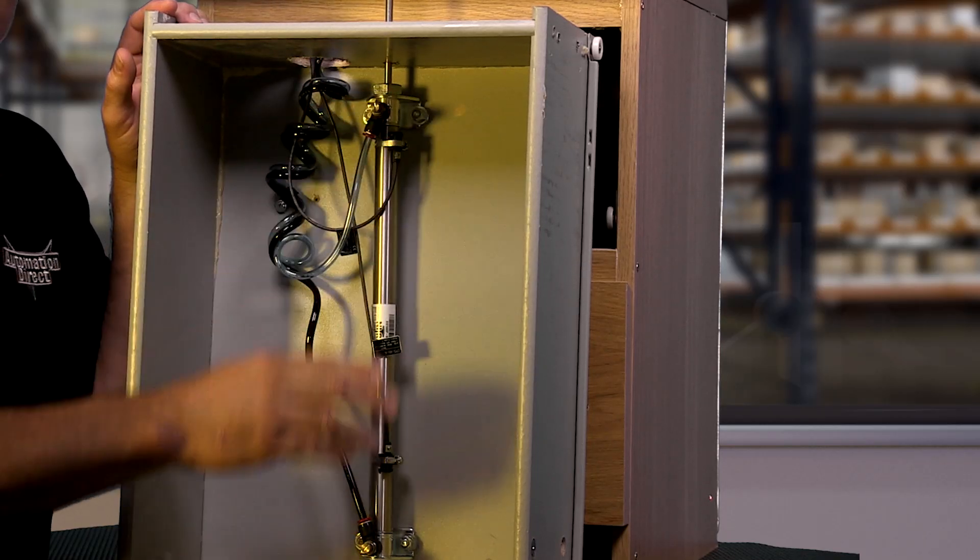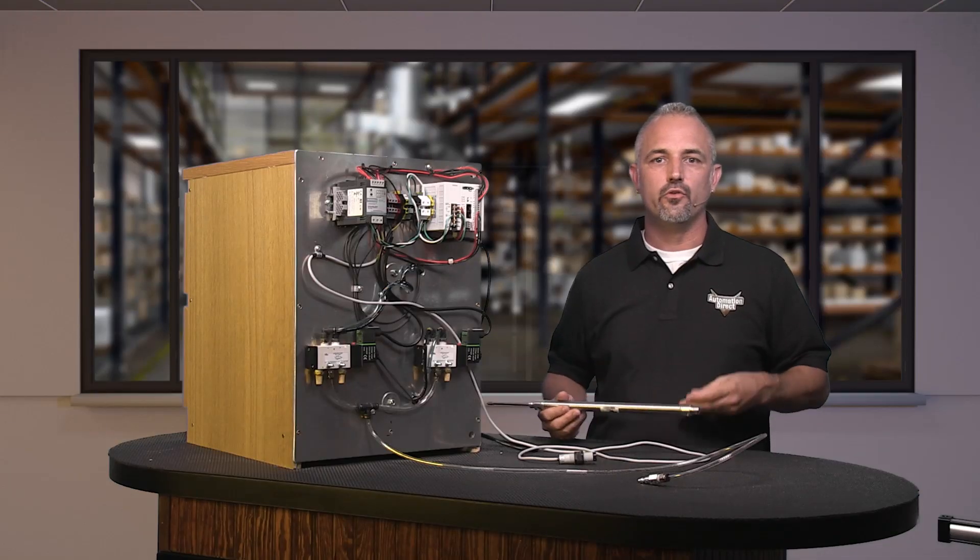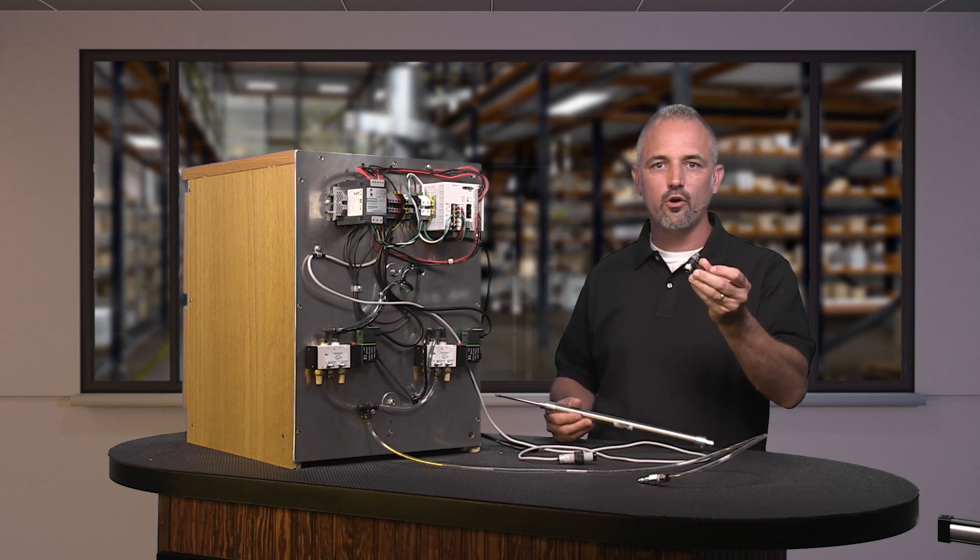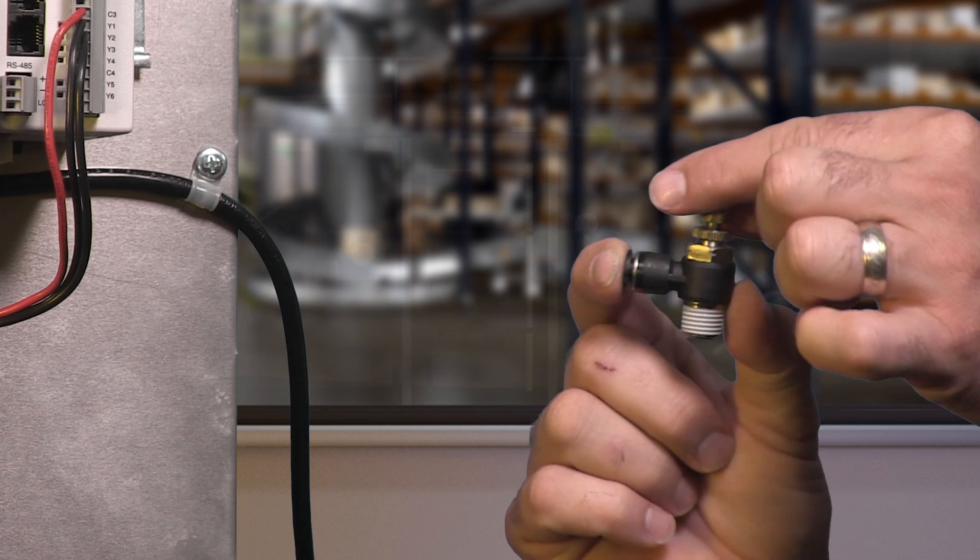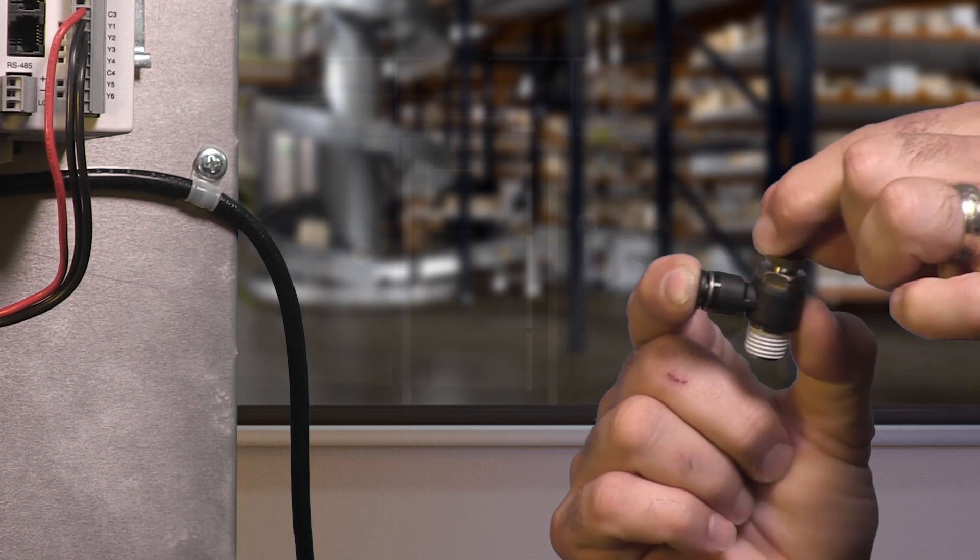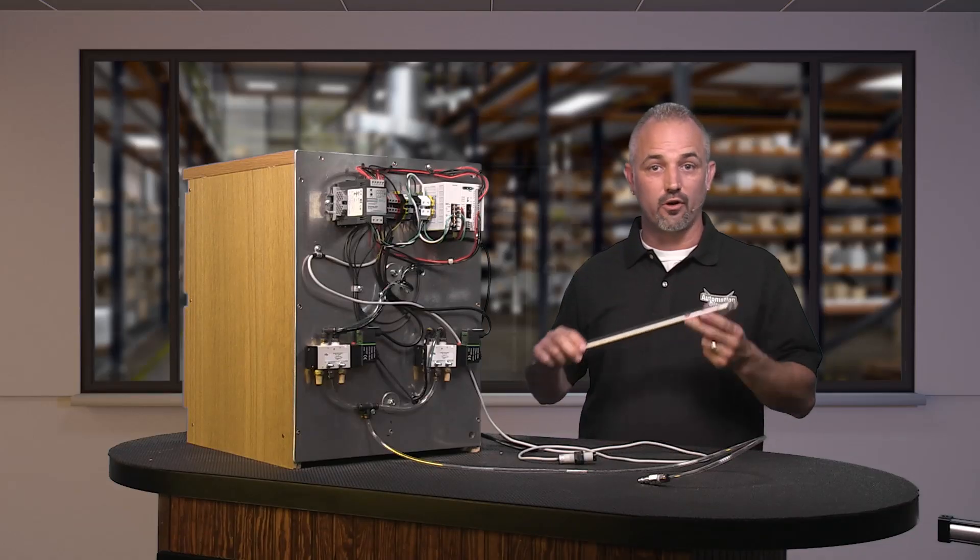Next, we plumb the 2 ports that will supply the air to the pneumatic cylinders. I chose to use these adjustable style flow control fittings here. They allow us to adjust the air pressure at the cylinder in order to speed up or slow down the flow. This makes the action smoother and prevents damage to our cylinders.